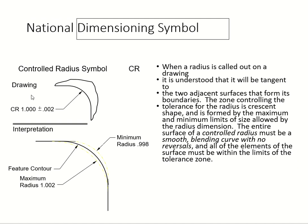The CR symbol — controlled radius — is the only new thing here. In the drawing we put CR. Your feature control shows the maximum: 1 plus 0.002 equals 1.002, and the minimum is 1 minus 0.002 equals 0.998. Some students get it reversed — be careful, the minimum value appears on top in the notation.